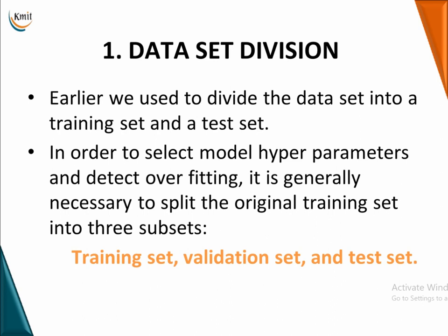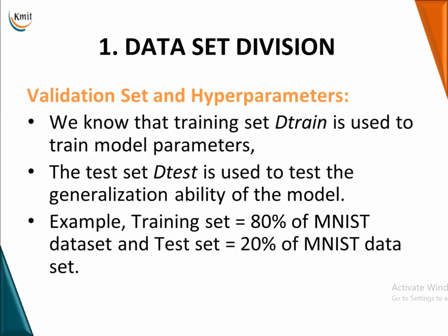We already know that our dataset is classified into two subsets: training and testing. We are now going to introduce a third type of dataset in order to select our hyperparameters of the model and also to detect overfitting. It is necessary to split our original training data into three subsets: training set, test set, and a third one which is the validation set.